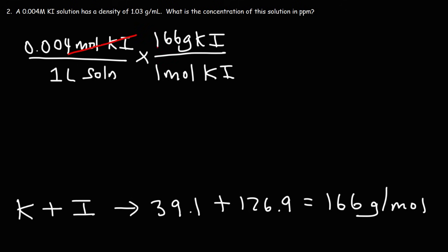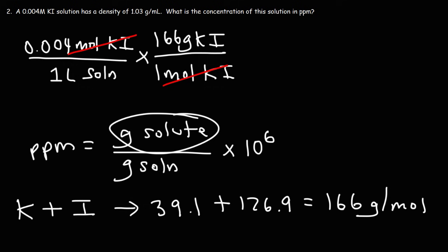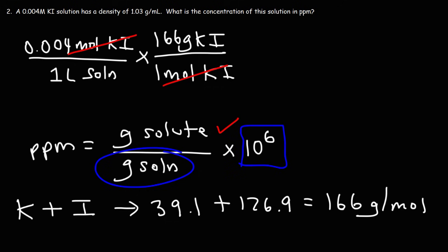That completes the first step: converting moles of solute to grams of solute. Remember, the parts per million formula is grams of solute divided by grams of solution, times 10 to the sixth. We already have grams of solute on top, so next we need grams of solution on the bottom. Once we have that, we multiply by 10 to the sixth.